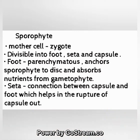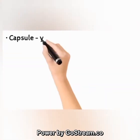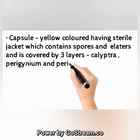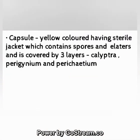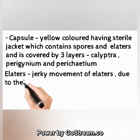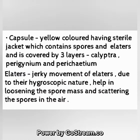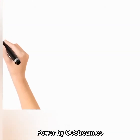The capsule is yellow-colored, having a sterile jacket, and contains spores and elaters. It is covered by three layers: calyptra, perigynium, and perichaetium. Elaters: the jerky movement of elaters due to their hygroscopic nature helps in loosening the spore mass and scattering spores in the air.